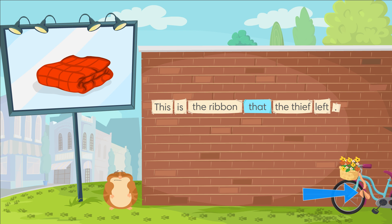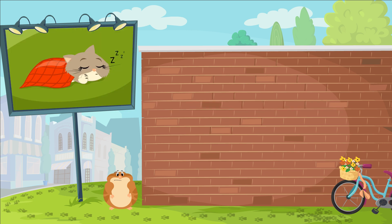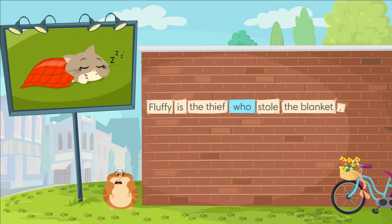Whose ribbon is it? Who's the thief? Oh, it's Fluffy's ribbon. Fluffy is the thief who stole the blanket.